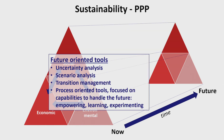A final category are the future-oriented tools, where we see concepts like uncertainty analysis, scenario analysis, and transition management. The last one, transition management, is a bit of an odd one — it is not about uncertainties or assessing possible futures, but is much more process focused. It focuses on the capabilities to handle the future: empowering, learning, and experimenting.